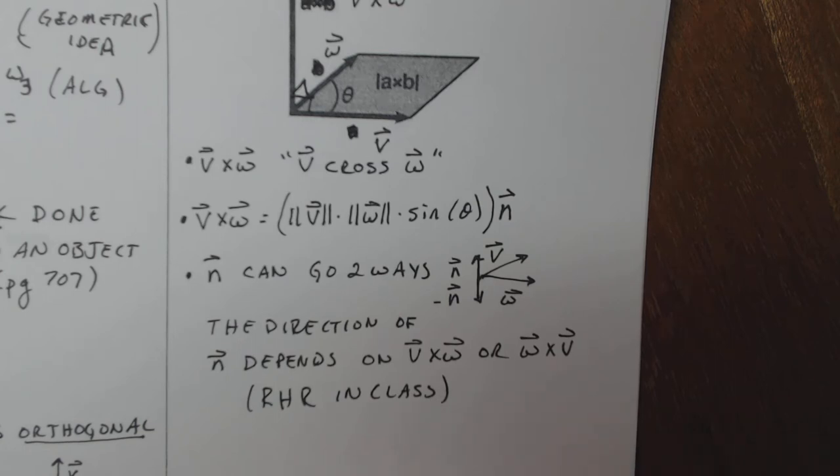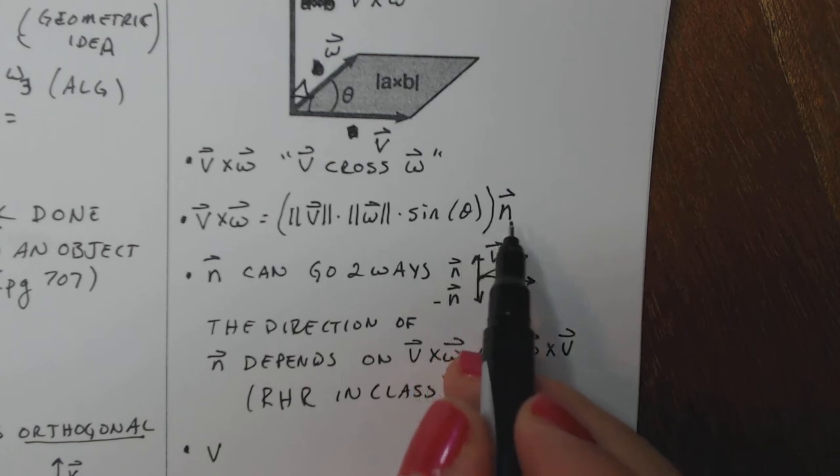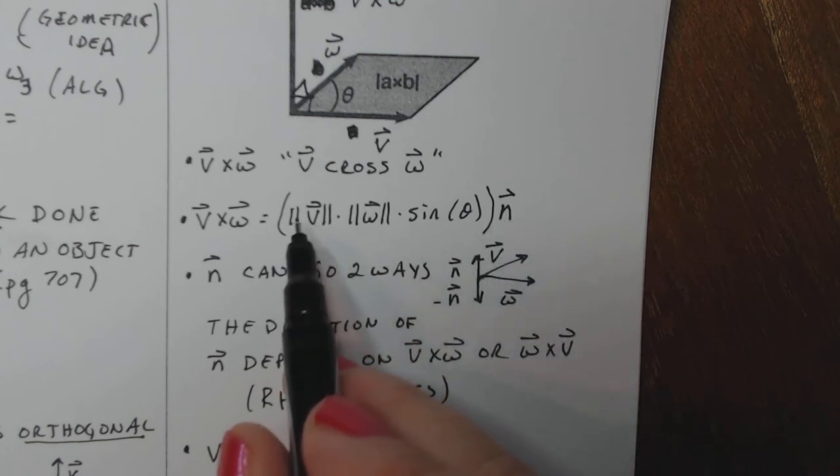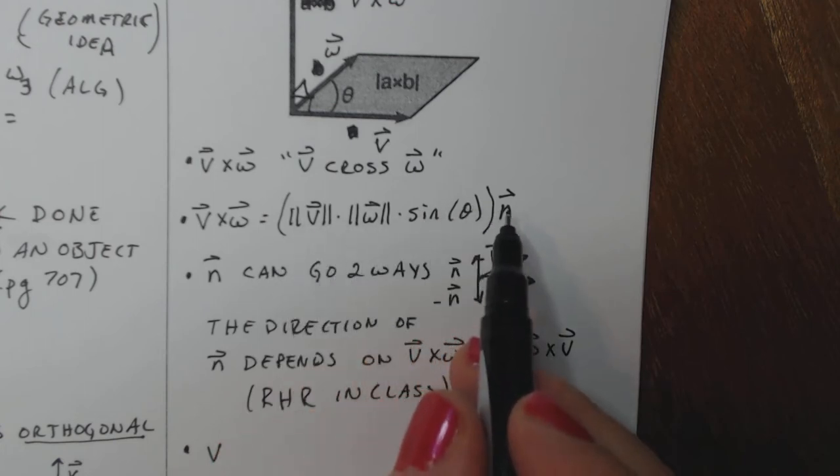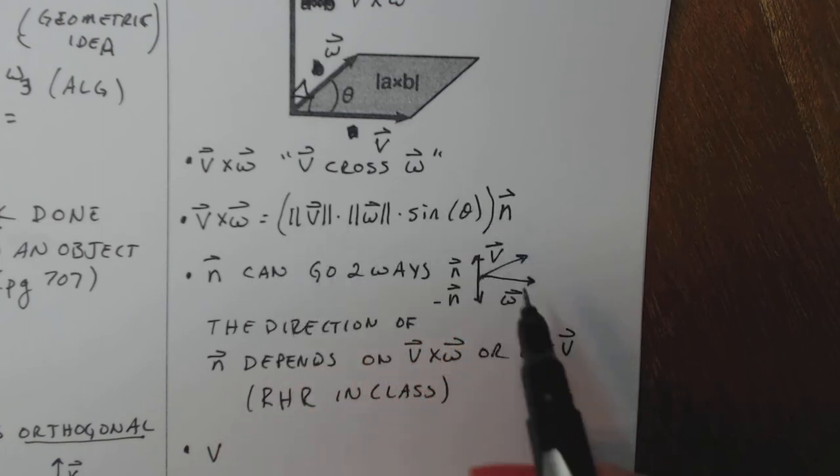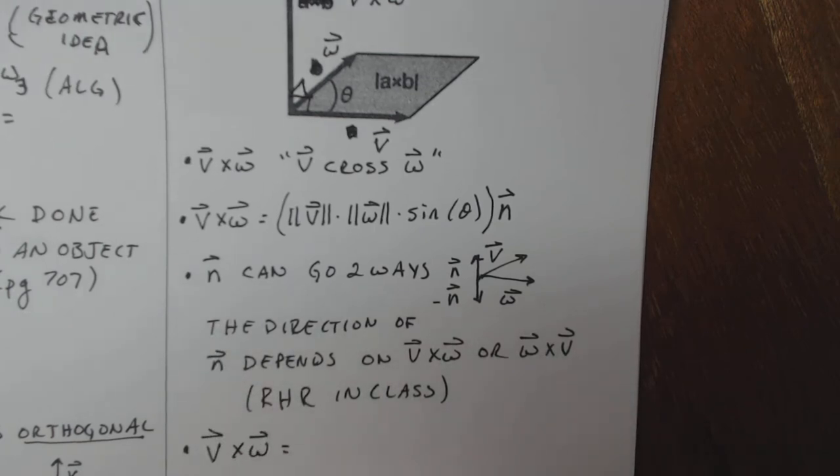All right. So let's talk about how we calculate the cross product. Well, besides using this formula, which is kind of a weird formula because this vector N here, this number here has a particular geometric value to it. But then when you have to put it in front of this vector, it's kind of weird.